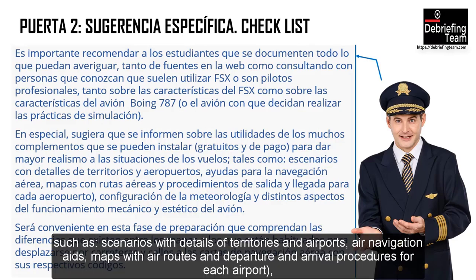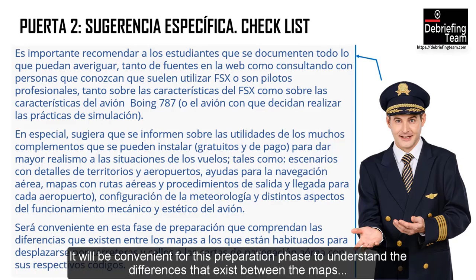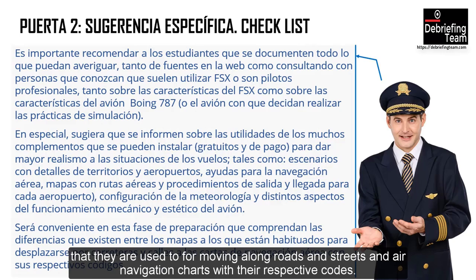Tales como escenarios con detalles de territorios y aeropuertos, ayudas para la navegación aérea, mapas con rutas aéreas y procedimientos de salida y llegada para cada aeropuerto, configuración de la meteorología, y distintos aspectos del funcionamiento mecánico y estético del avión. Será conveniente en esta fase de preparación que comprendan las diferencias entre los mapas a los que están habituados para desplazarse por carreteras y calles, y las cartas de navegación aérea con sus respectivos códigos.